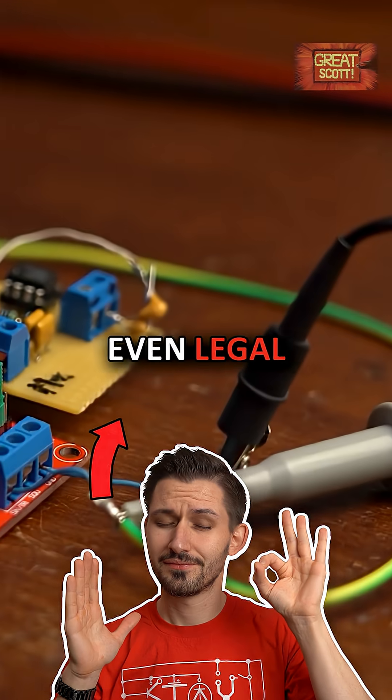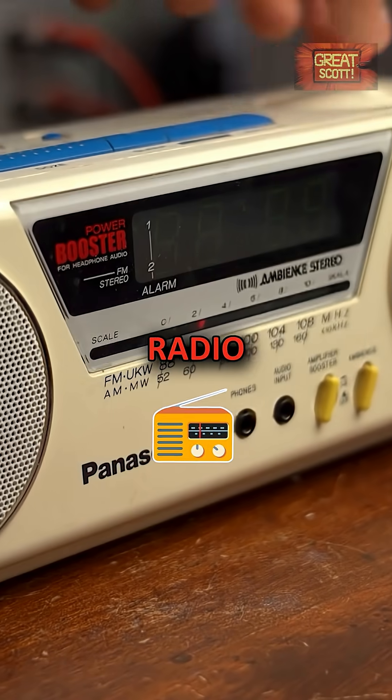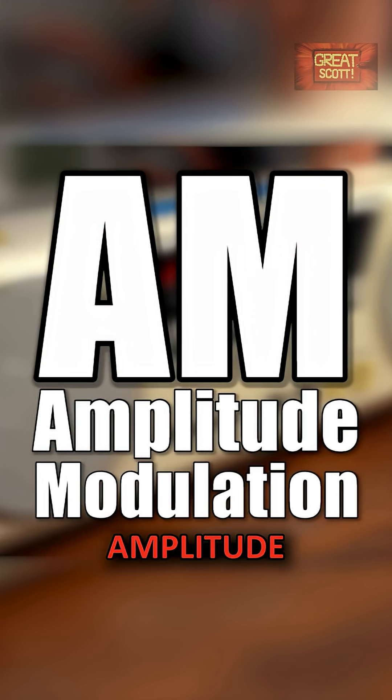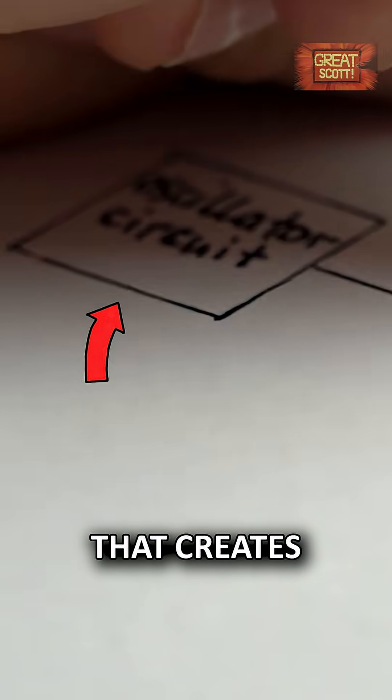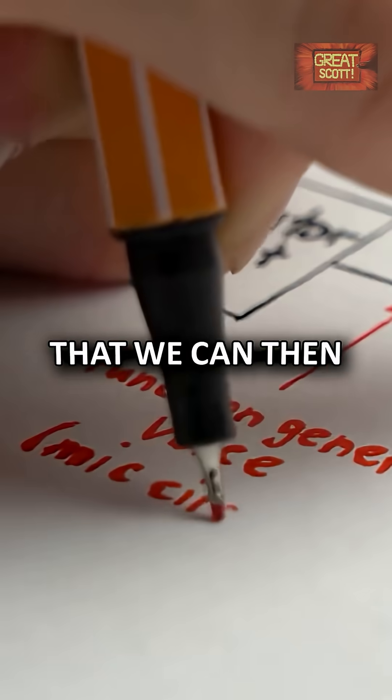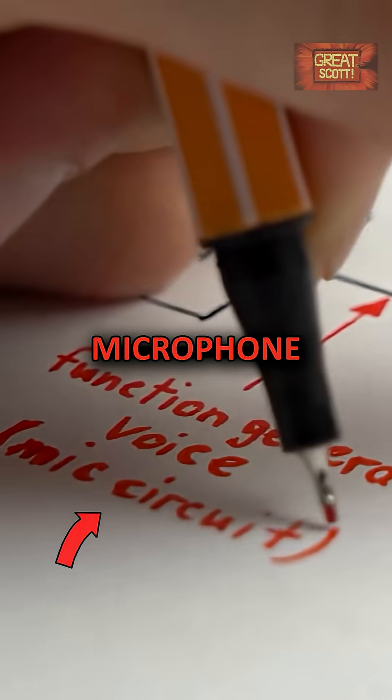You might be asking yourself if that is even legal. For AM radio communication, which stands for amplitude modulation, we need some kind of oscillator circuit that creates a suitable carrier wave that we can then modulate with a microphone circuit.